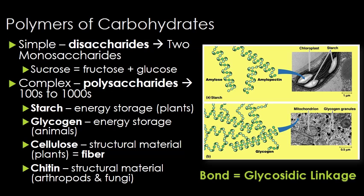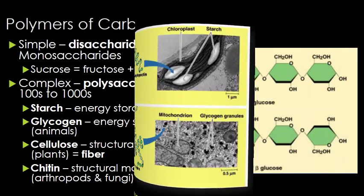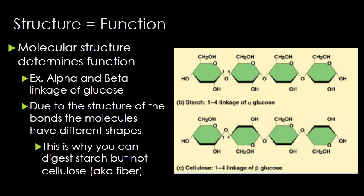The more important polymers are the complex ones — the polysaccharides, which are hundreds to thousands of monomers. Starch and glycogen are both energy storage: starch stores energy in plants with very simple structures, while glycogen is a highly branched structure used for energy storage in animals. Cellulose and chitin provide structural materials. Plants use cellulose in their cell walls, and we use it as dietary fiber. Chitin makes up an insect's exoskeleton or the cell walls of a fungus.